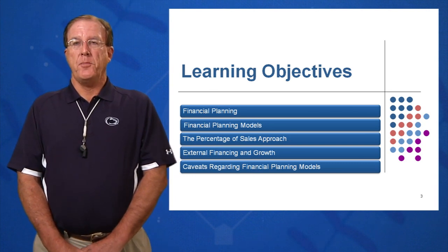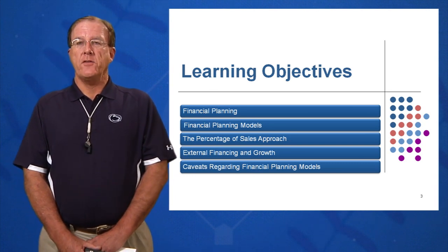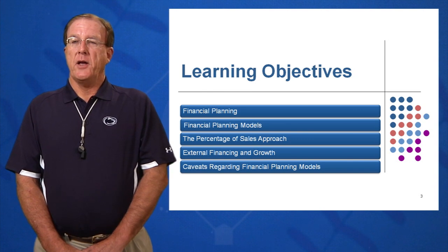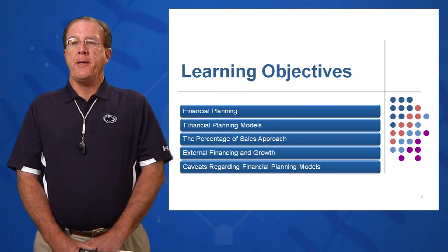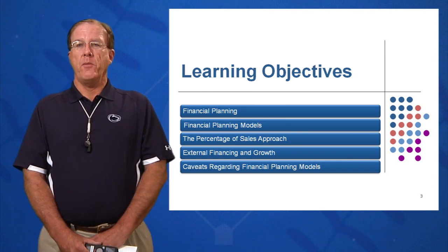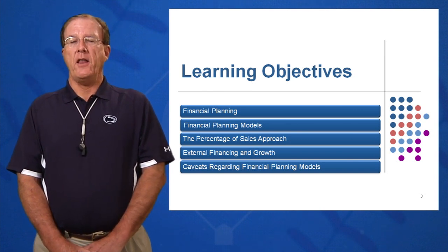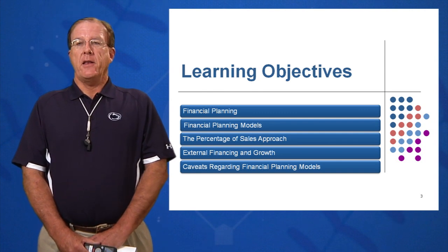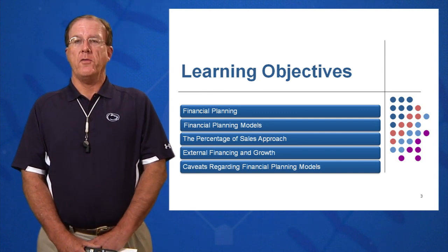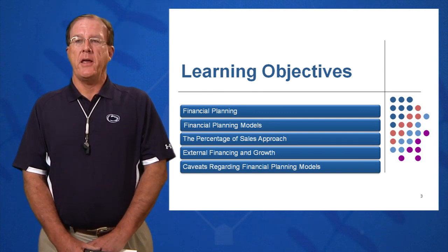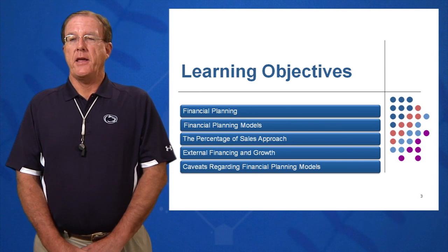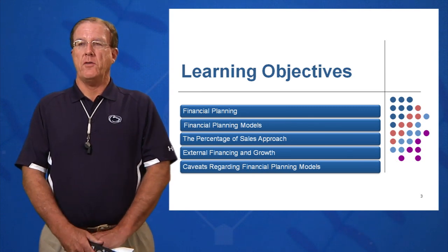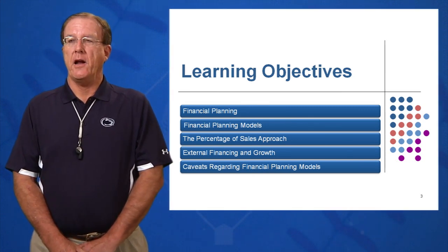Learning objective three is using the percentage of sales approach to forecast the future. Then we'll look at external financing and growth — how external financing and investment affect your growth rate. Finally, we'll consider some caveats about financial planning models that we want to be careful of.